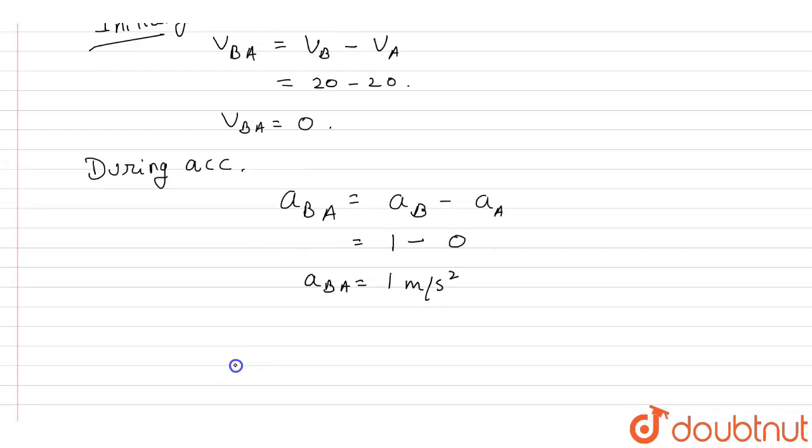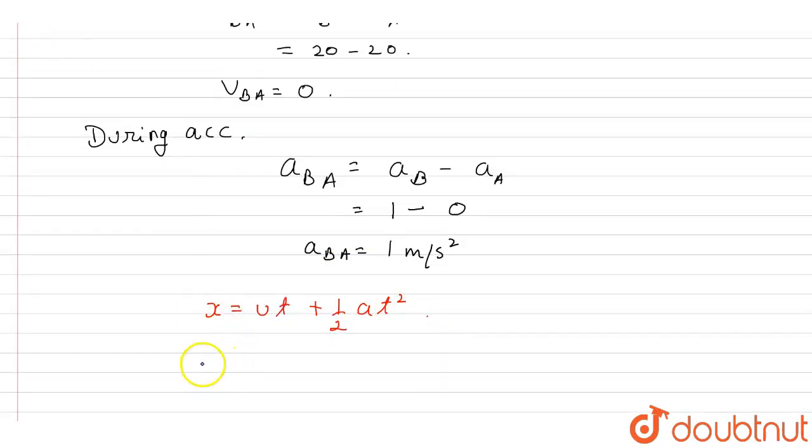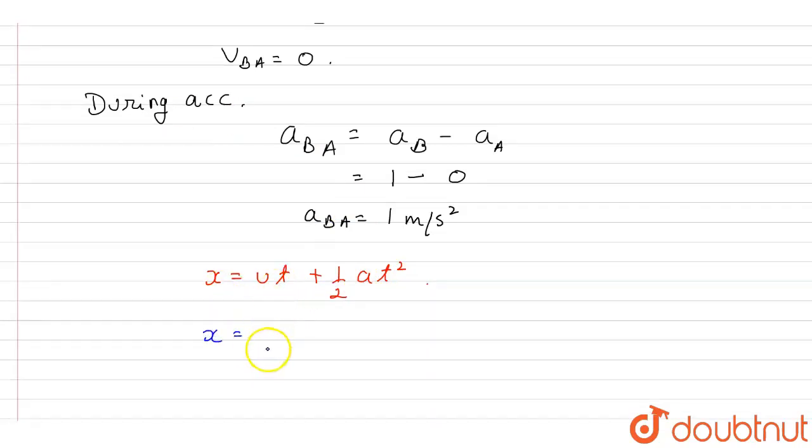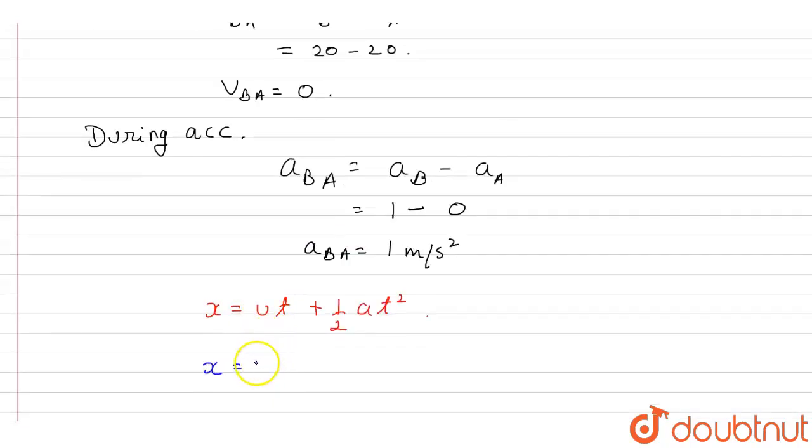Now we can use the third equation of motion to find the distance, that will be equal to x is equal to ut plus half at squared. So in this case, this will be equal to x is equal to initial relative velocity of vBA times t plus half aBA t squared.